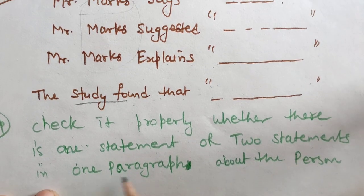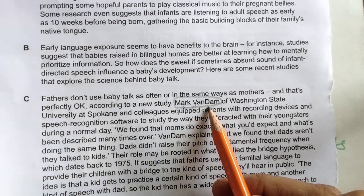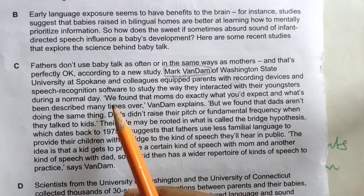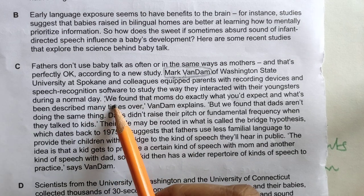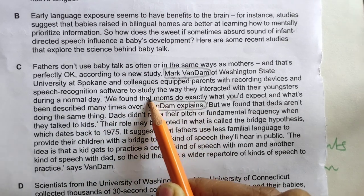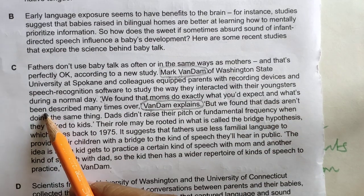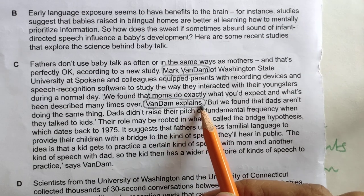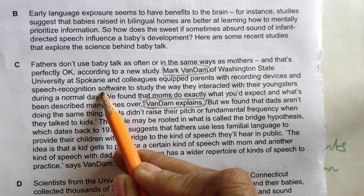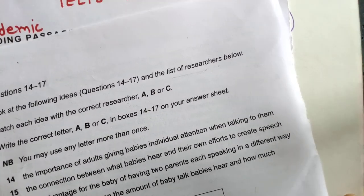The next important thing is to check whether there is one statement or two statements in one paragraph about a person. For example, Mr. Mark van Dam's views may also be given in the C paragraph — meaning there may be one or two statements. So we found 'moms do exactly what you would expect' and van Dam explains — that explanation is important and we may get an answer from those inverted comma statements.